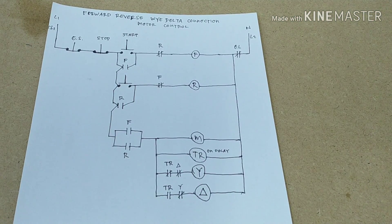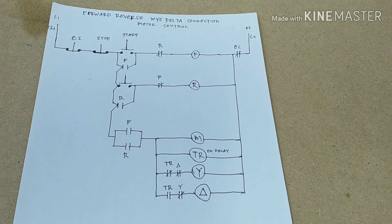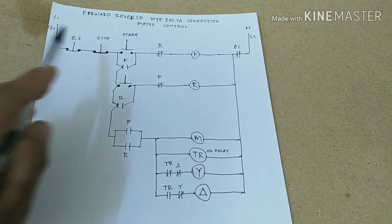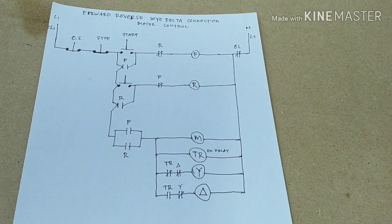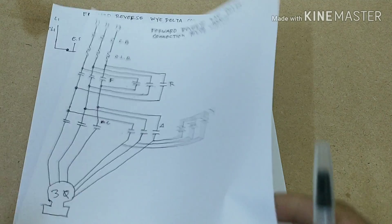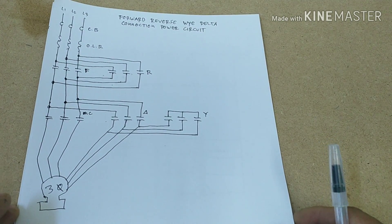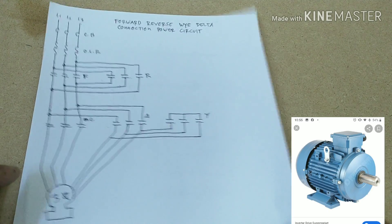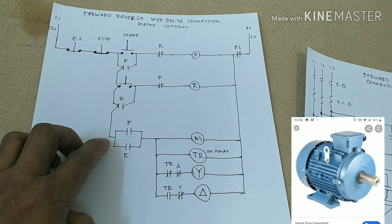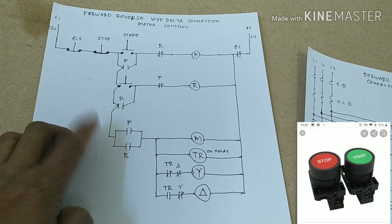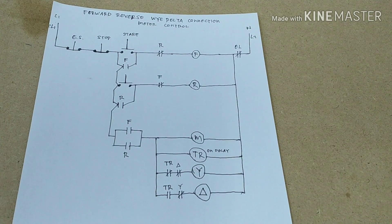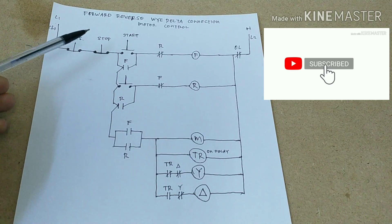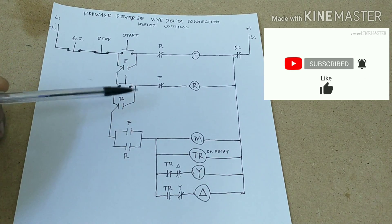Hello guys, welcome to my channel. I'm going to share with you the ladder diagram or schematic diagram for forward-reverse Y-delta connection — both the motor control and power circuit. This is our power circuit, which includes the motor and the control kit, as well as the push buttons for control of the motor.